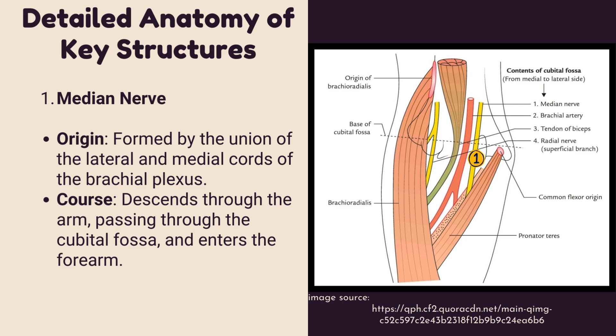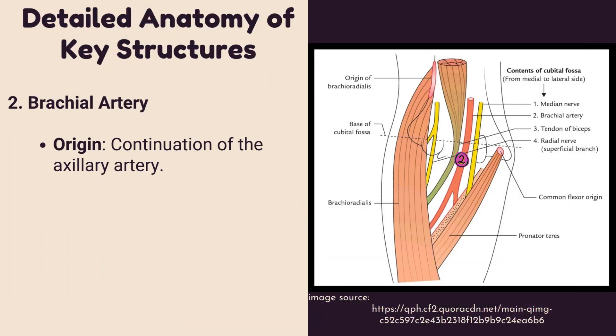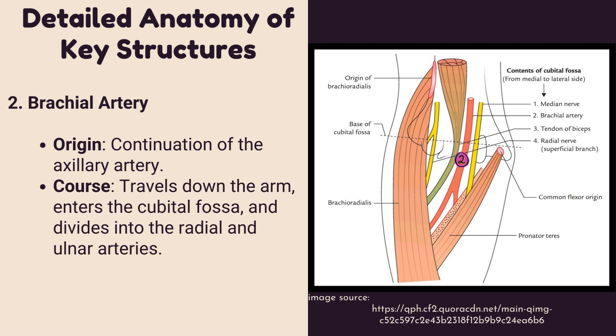The brachial artery — origin: it is the continuation of the axillary artery. Course: it travels down the arm, enters the cubital fossa, and divides into the radial and ulnar arteries.